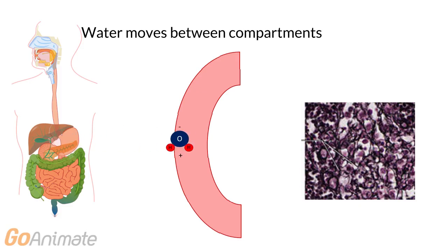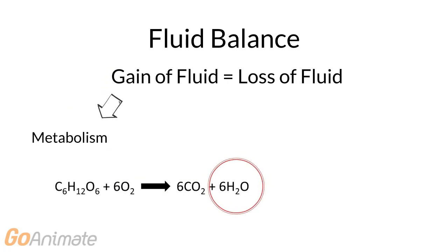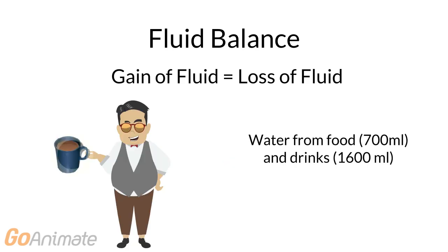Water moves between these compartments through semi-permeable membranes. For water to be in balance in the body, the gains and losses must be equal. The body gains fluids in several ways. Metabolism, such as aerobic respiration, produces about 200 milliliters of water each day. Water is also gained by food, about 700 mils, and drink, about 1600 mils.